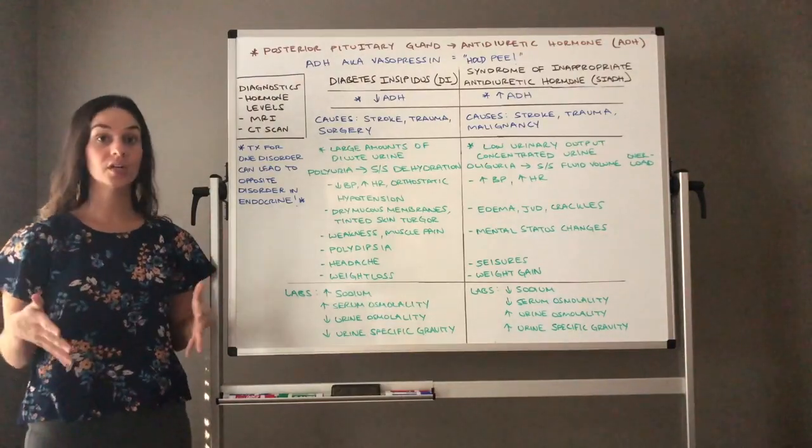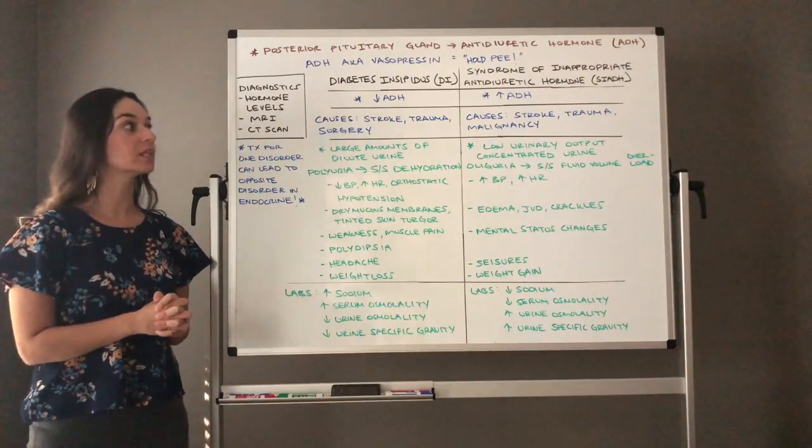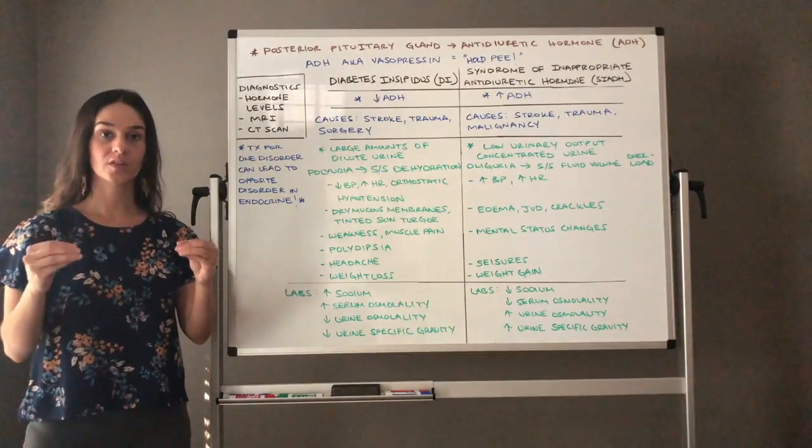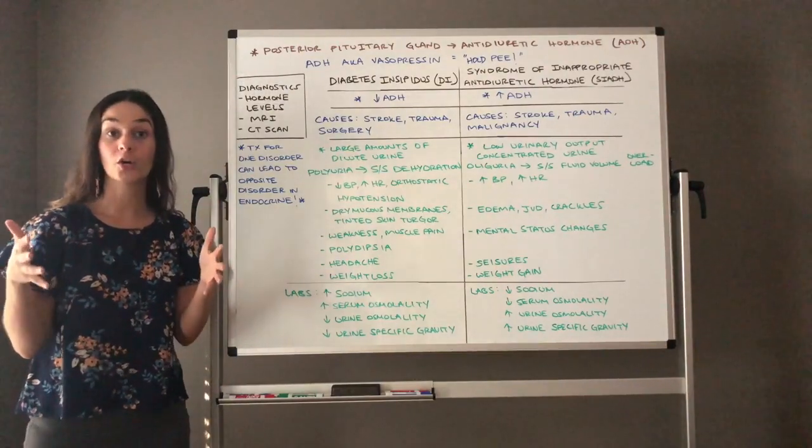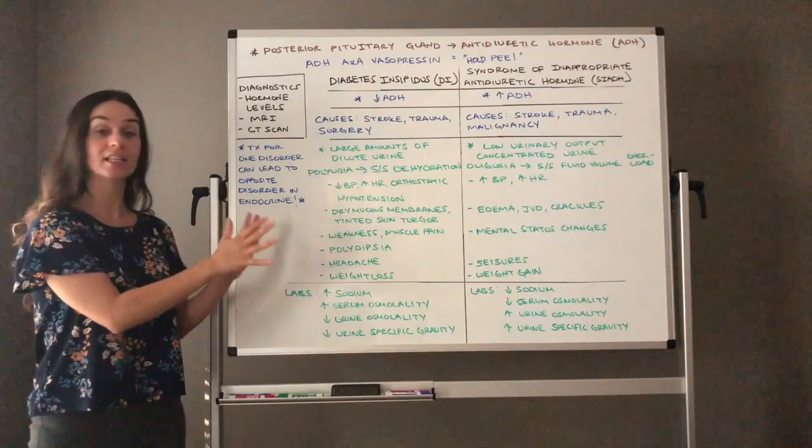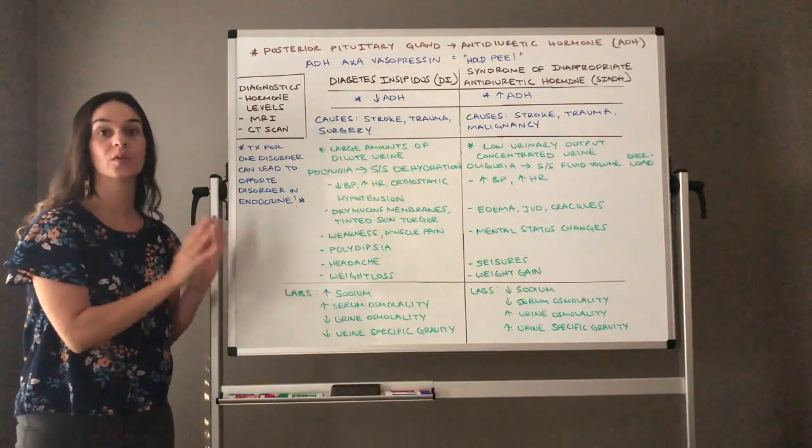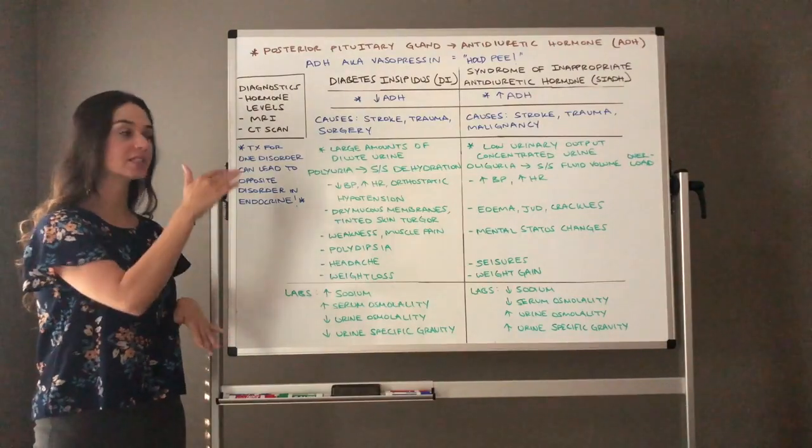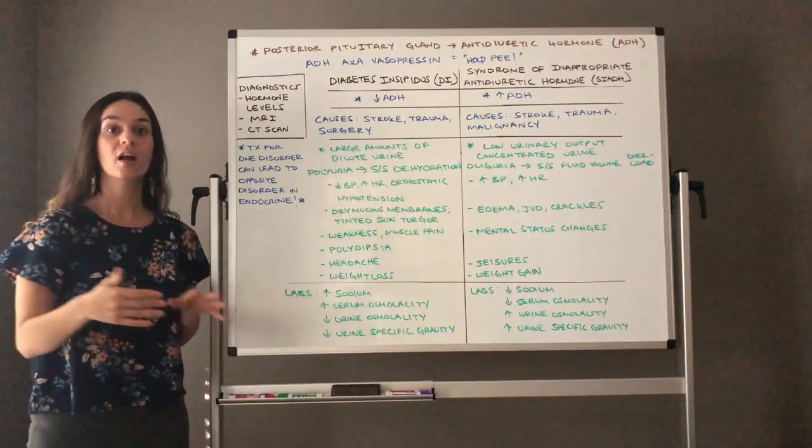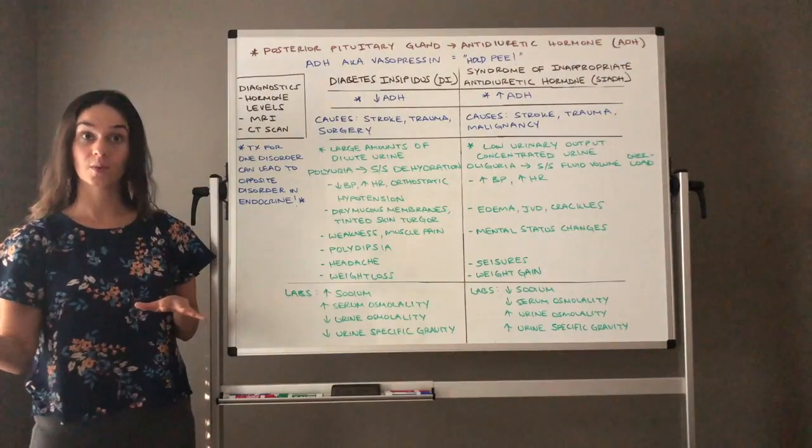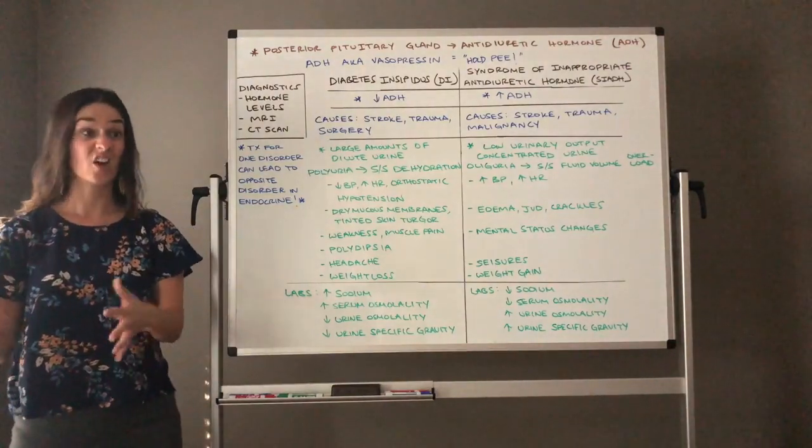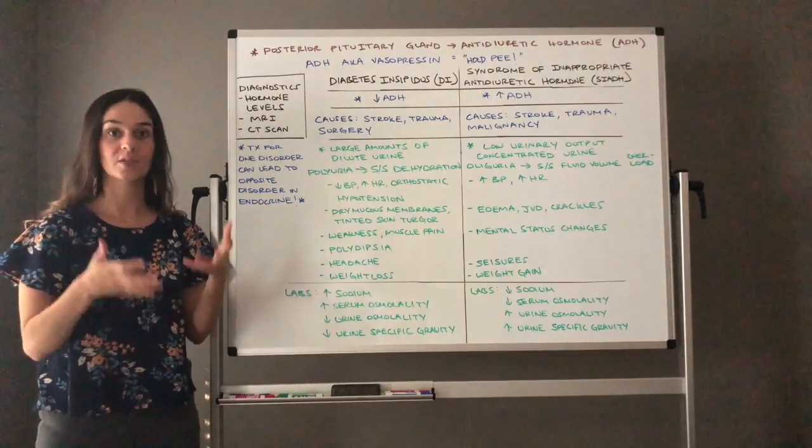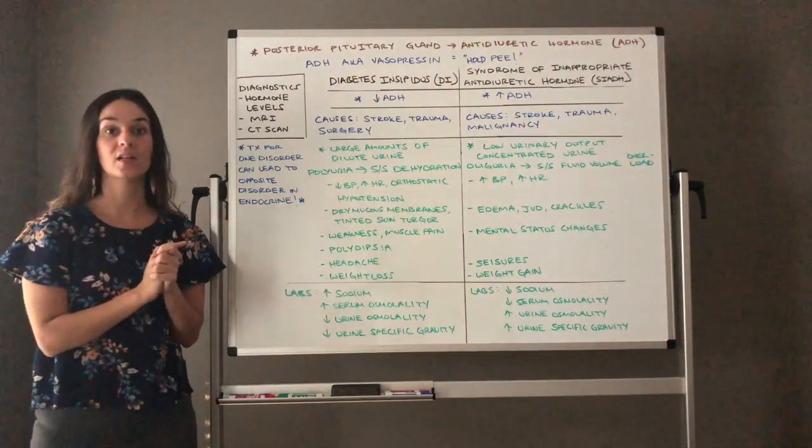So future nursing students or current nursing students, I really encourage you to look at your endocrine disorders and find the disorders that are correlated to the same hormone. For instance, these two disorders both are related to ADH, antidiuretic hormone. So make a chart because you will see as we go through this chart, if we have a low amount of this hormone, it's going to present symptoms that are opposite. If we have a high amount of the hormone, it's going to present symptoms, and typically they are opposite of one another.